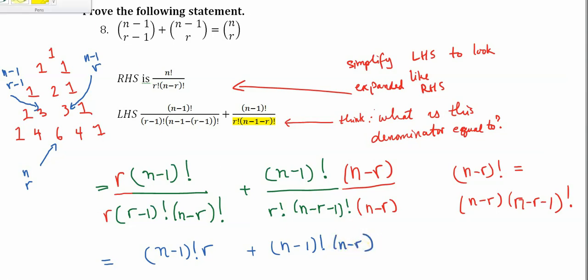Okay, now the denominator, this is where things simplify a little bit further. So we have r times r minus one factorial. So another way we can write that is just r factorial.